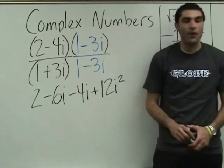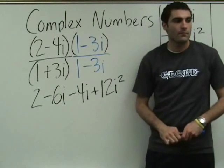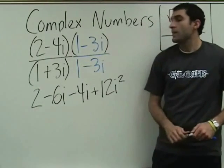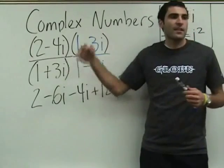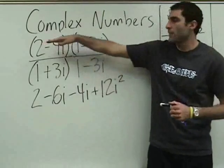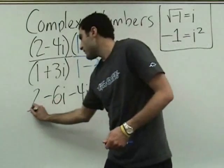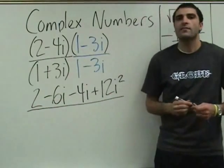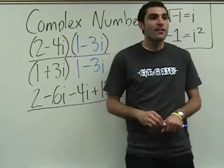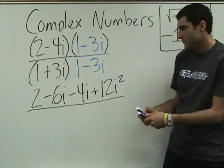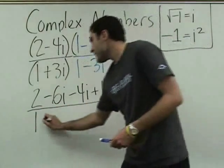We FOILed — F-O-I-L. Cross multiplying occurs with equal signs. Here, we multiply across. Volunteer for the bottom: one, minus 3i, plus 3i, minus 9i squared.